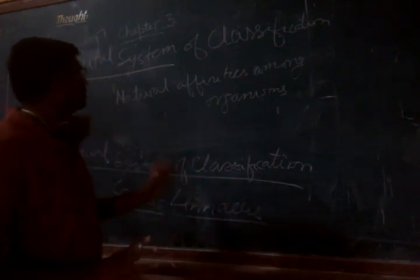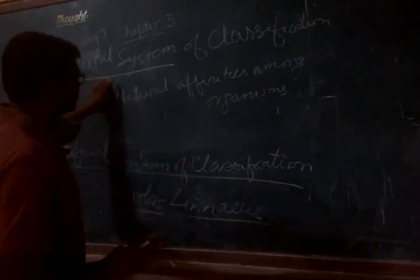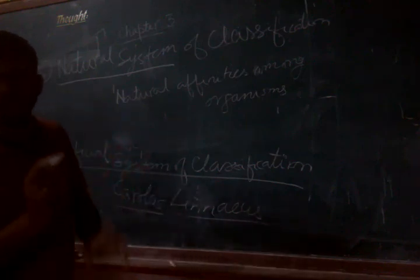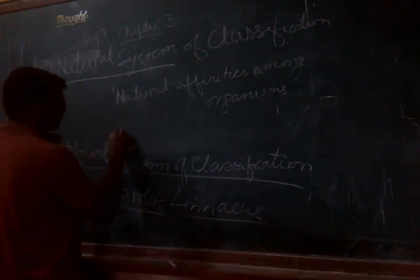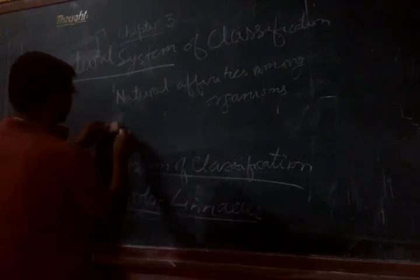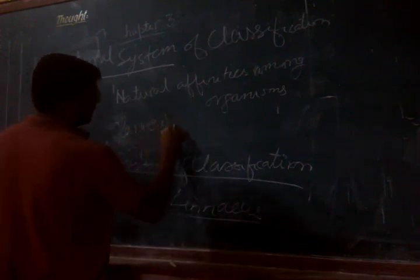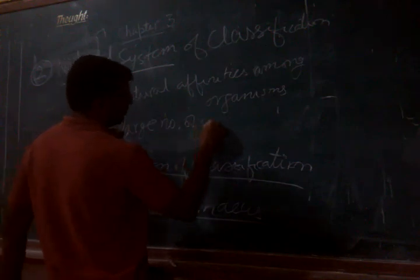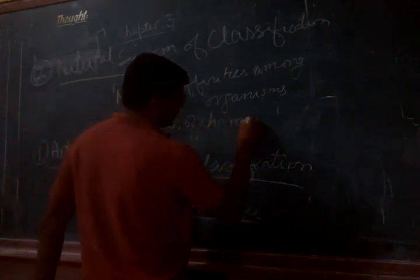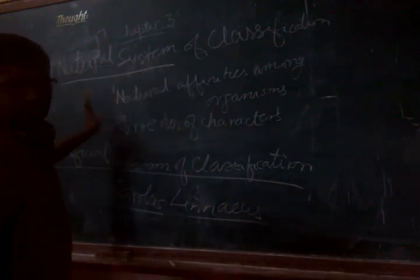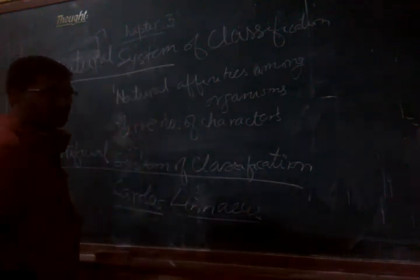So in the natural system of classification, instead of a few characters, a whole range of several characters were considered — a large number of characters were considered. So in the natural system of classification, we will discuss more about this in the next lecture.